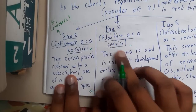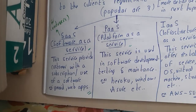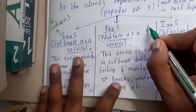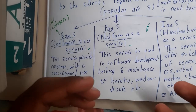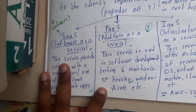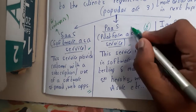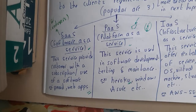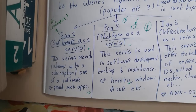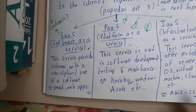Similarly, PaaS — Platform as a Service. This service is used in software development, testing, and maintenance. For example, if you have coded in Python and want to publish it online, you can use Platform as a Service. A website like Heroku lets you create a project and launch your application there, giving you a link so whenever someone clicks it, your application opens in a web view. They are providing you a platform to run your software, which is why it is called Platform as a Service.